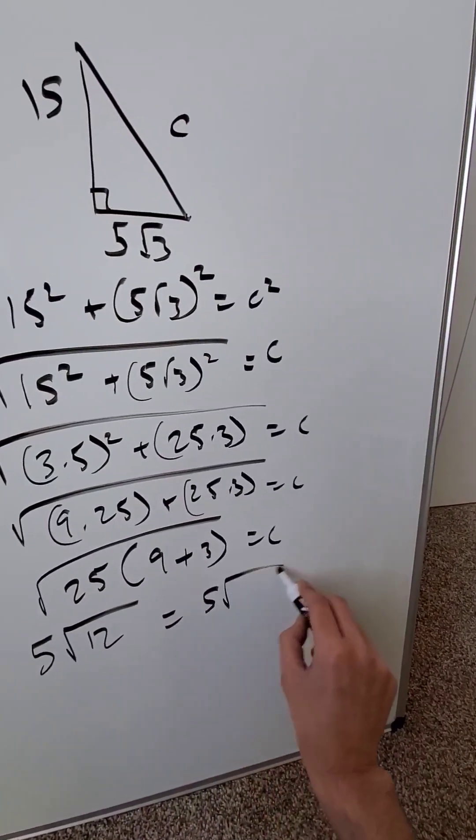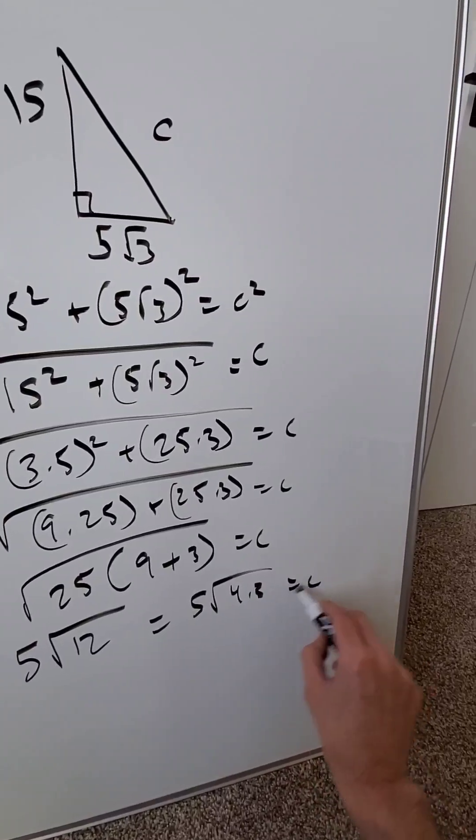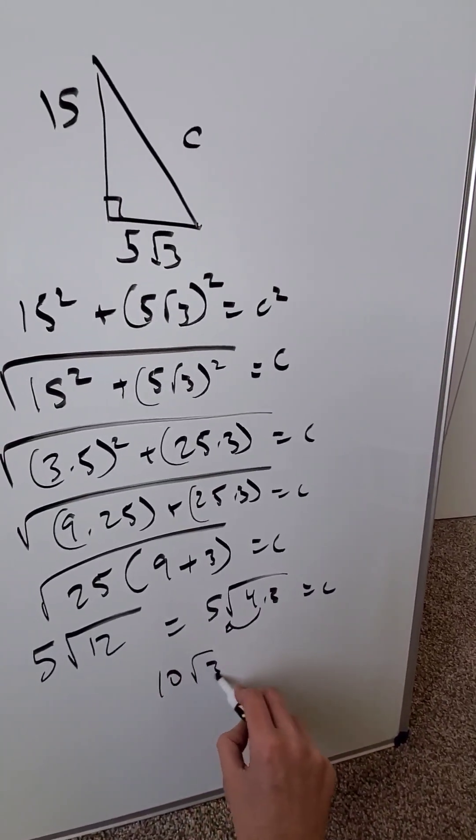And I can do 5 root 4 times 3 is equal to c. The 4 will come out as a 2. I'll have a 10 root 3.